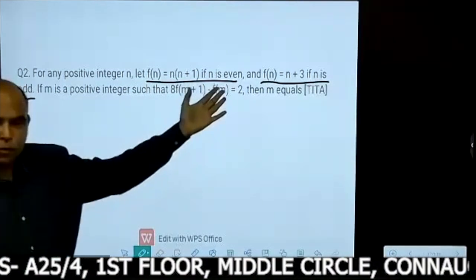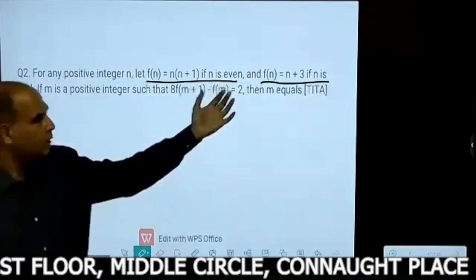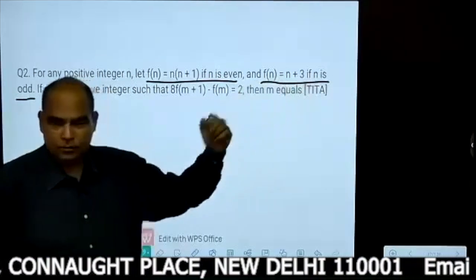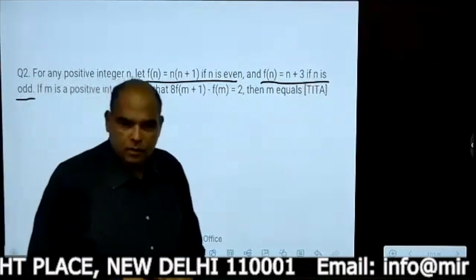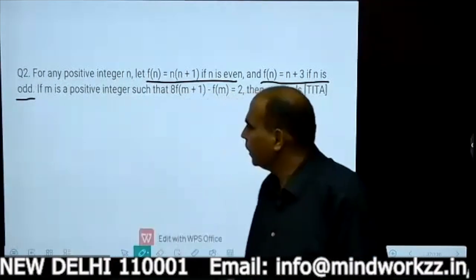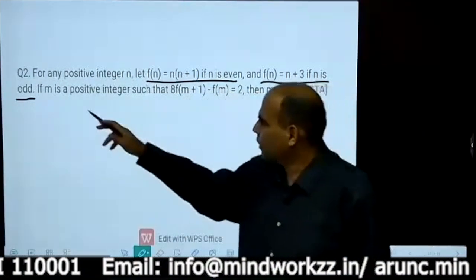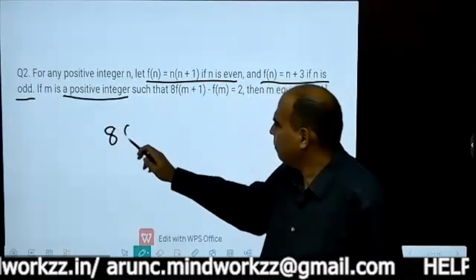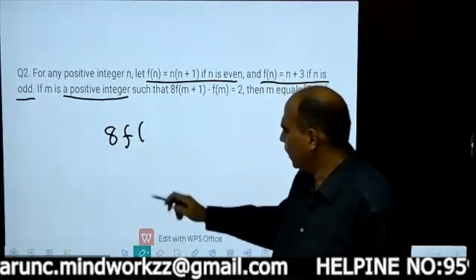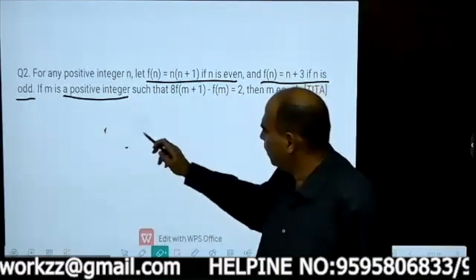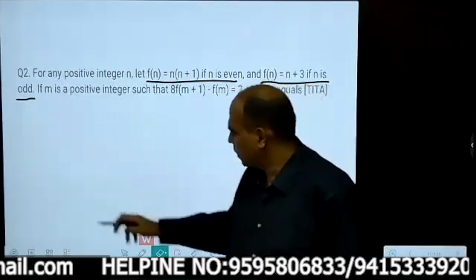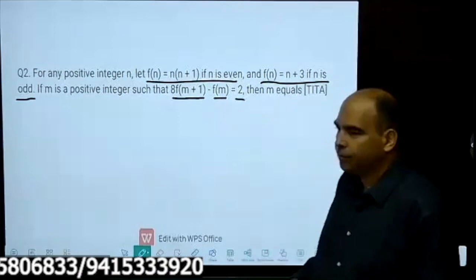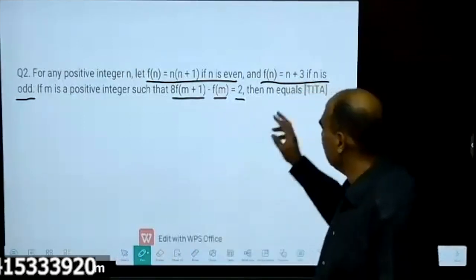If I put n as 2, 4, 6 and apply this formula — then the problem tells me: if m is a positive integer such that 8 times f(m+1) minus f(m) is equal to 2, then m equals?